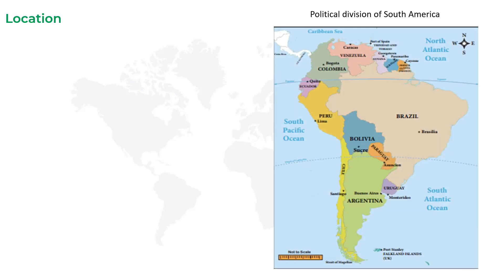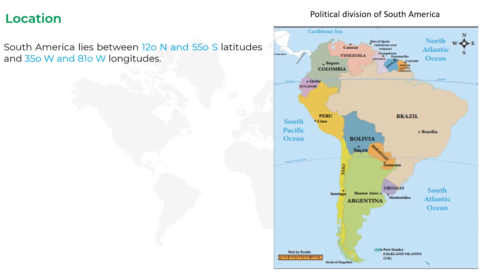South America lies between 12 degrees north and 55 degrees south latitudes. Latitude is the measurement of distance north or south of the equator. It is measured with 180-degree imaginary lines that form circles around the Earth, east-west, parallel to the equator.